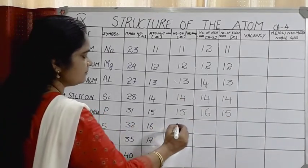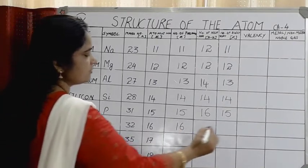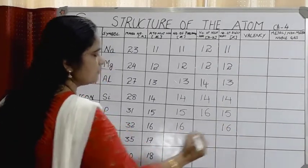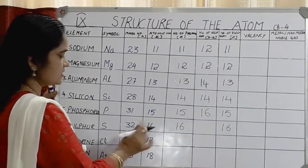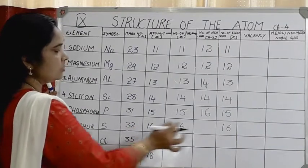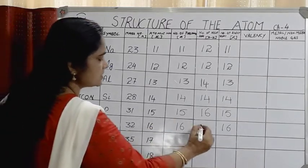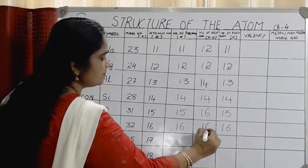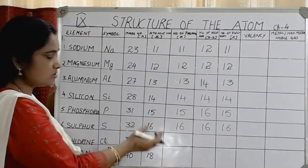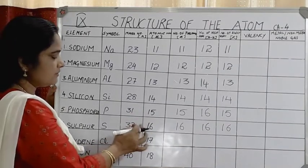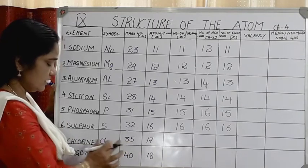Next is sulfur, with atomic number 16. Number of electrons = 16, number of protons = 16. The mass number is 32. To find neutrons: 32 minus 16 = 16. So sulfur has 16 neutrons. You get the number of neutrons by subtracting the atomic number from the mass number.